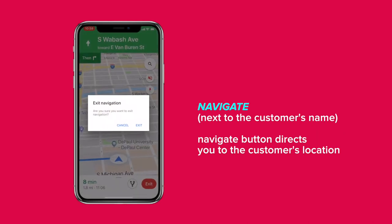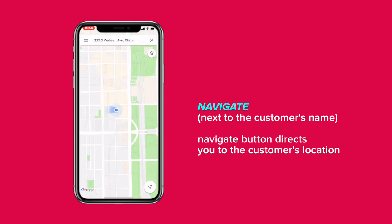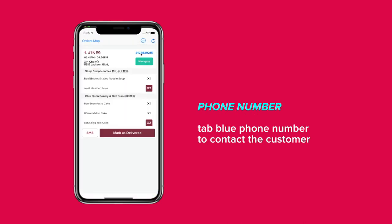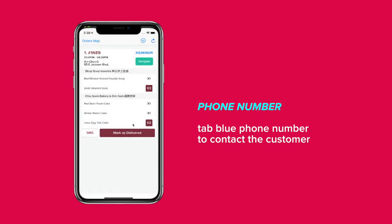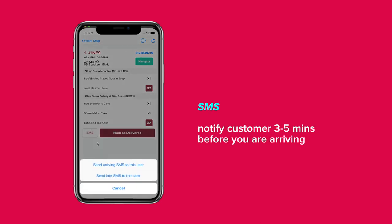Press the Navigate button next to the customer's name and use the map to drive to the customer's location. You can tap the blue phone number to call the customer. You can also tap the SMS button to notify the customer that you're arriving at their location, or to notify them that you'll be a bit late.